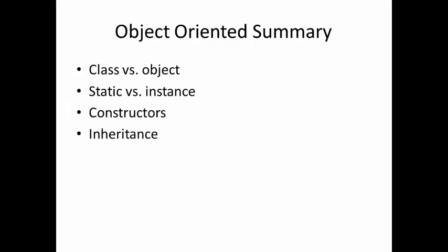So what have we covered today? We've covered the notion of a class and an object. We've covered the notions of static versus instance, both variables and methods. We've talked about constructors, and we've talked about inheritance. These are the building blocks of object orientation in Java.